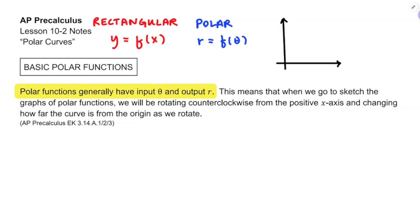Let me show you what I mean. When we go to sketch the graphs, we'll be rotating counterclockwise from the positive x-axis, just like the unit circle, and changing how far the curve is from the origin as we rotate. Suppose I'm graphing a function f of theta on theta equals 0 to pi over 2, and maybe that function is decreasing. So r, the distance from the origin, would be decreasing as theta increases from 0 to 2 pi, and we might have a curve that looked like that.